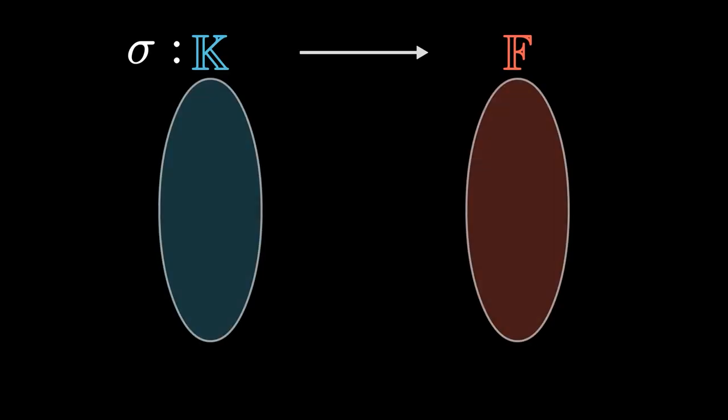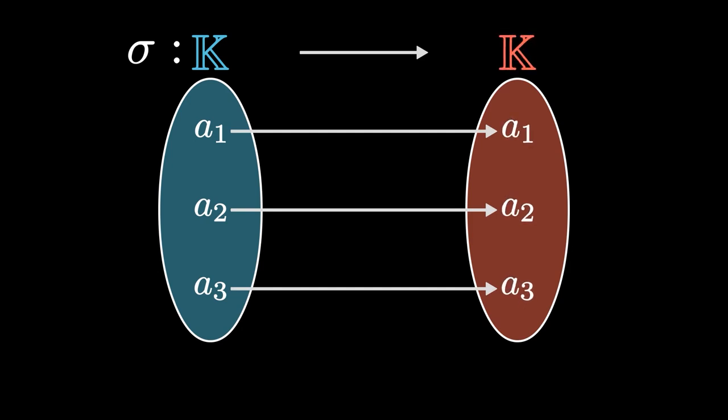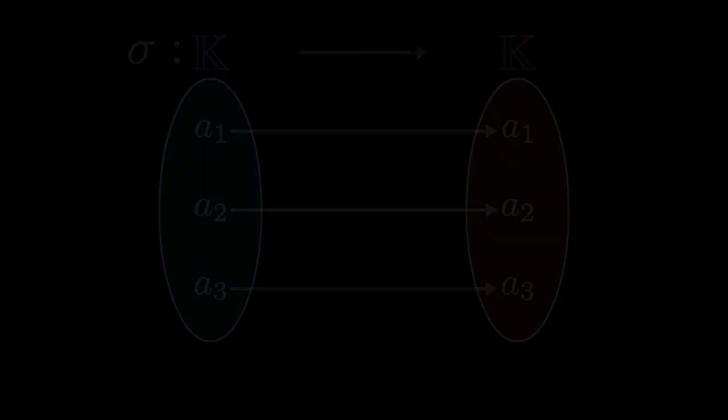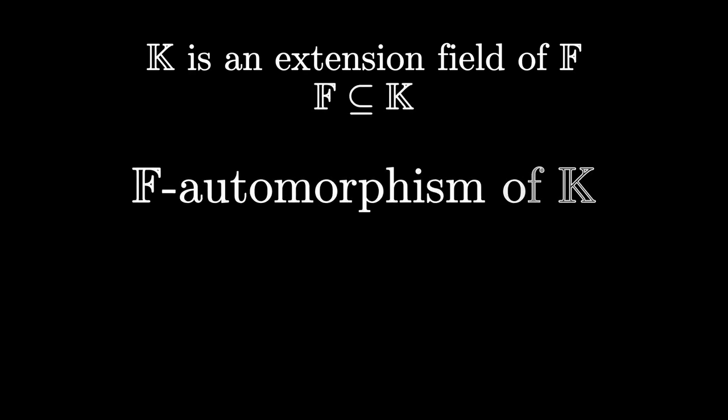Now, there are special types of functions. One is called an isomorphism, which is pretty much just a bijection. So every element of one field is assigned to exactly one element of another, and no element is left without an assignment. Another is called an automorphism, which is an isomorphic function from one field to itself. Now, if we have k as an extension field of f, meaning f is a subset of k, then an f-automorphism of k is an isomorphism, sigma, from k to k that is the identity morphism for f, so sigma of c is equal to c for all c in f.